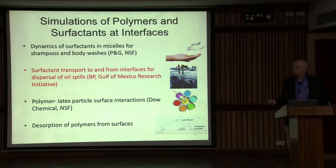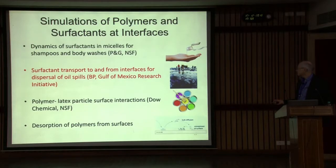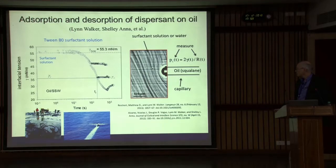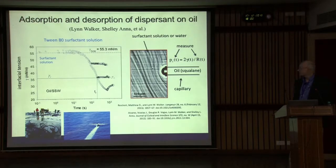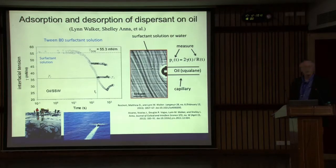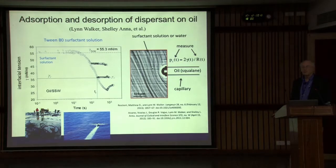Now I'll turn to transport of surfactant to interfaces of oil droplets. This proved important in the Gulf oil spill, where a dispersant was sprayed over the oil to break up the patch and eventually injected right into the oil column to create droplets small enough not to form a slick. A key question is how long it takes the surfactant molecule to get to the surface and, once there, how long it stays. With a lot of water in the Gulf, one would wonder how long you could stabilize oil droplets in the presence of the surfactant.